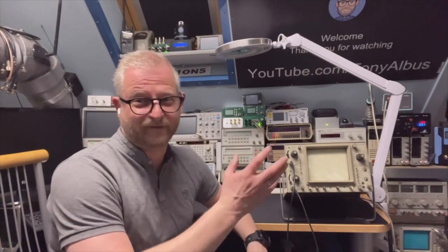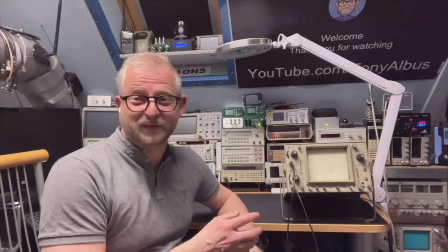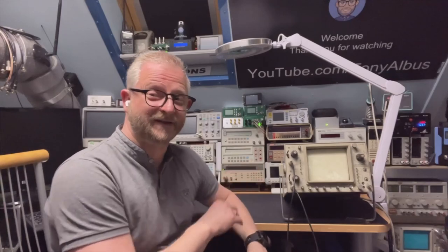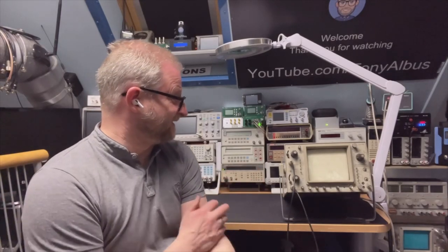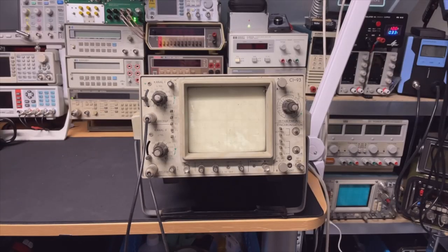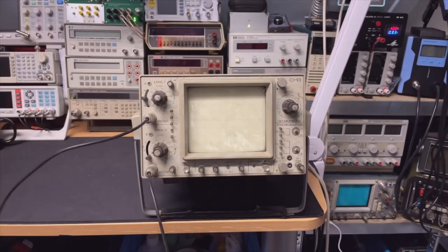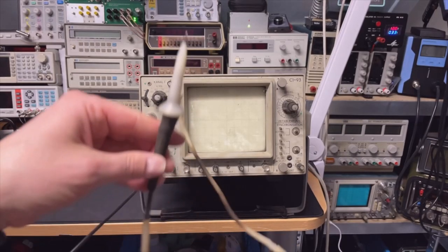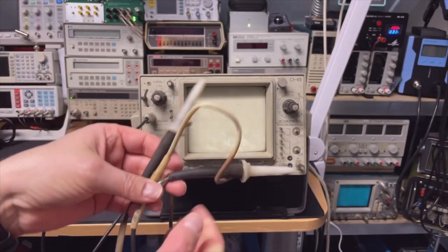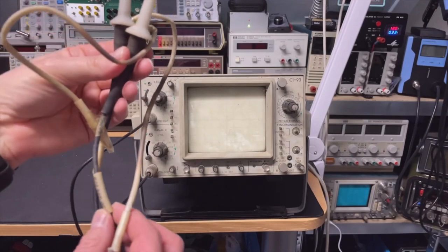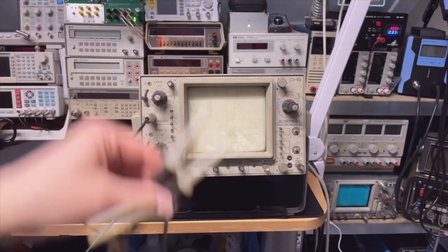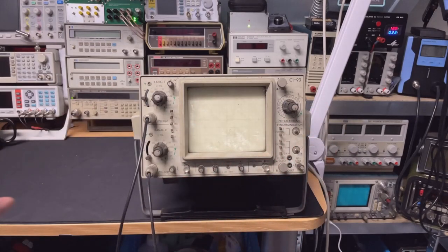But this one, I like to call it a barn find but it was not really. It's from the local eBay in the Netherlands, the Marktplaats. As you can see it is a little bit dusty. It came with the probes. I'm not sure if these are the original probes but they look just as dirty at least. I think this is a 30 megahertz already. So my guess would be late 80s.